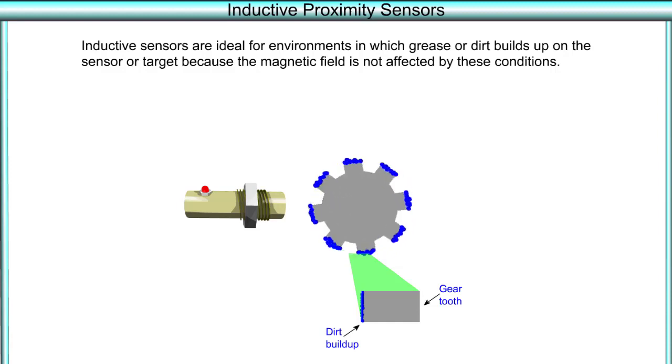Inductive sensors are ideal for environments in which grease or dirt builds up on the sensor or target, because the magnetic field is not affected by these conditions.